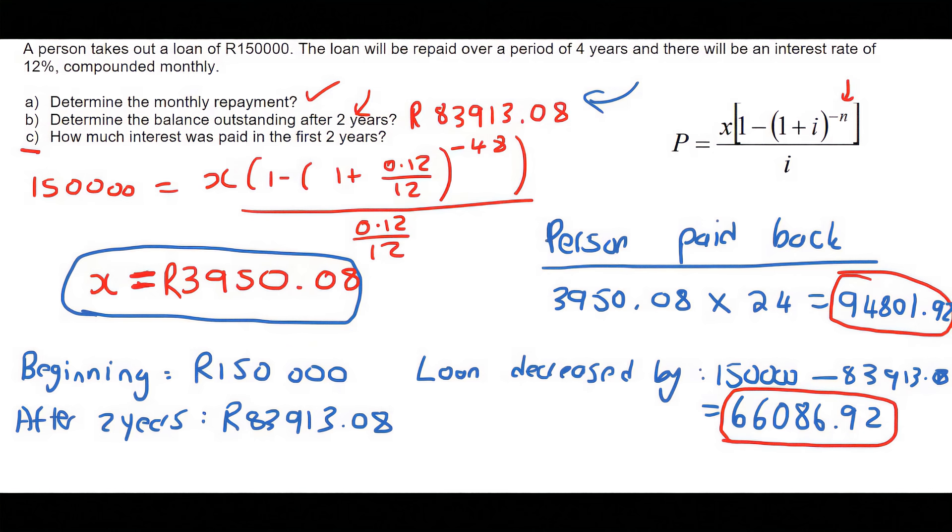How can this be? Surely, if you pay back the bank 94,000 Rand, then that means your loan should go down by 94,000 Rand.